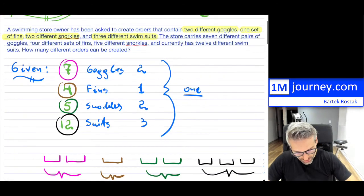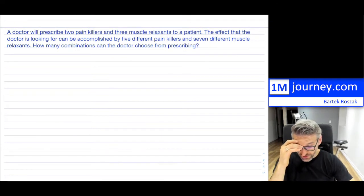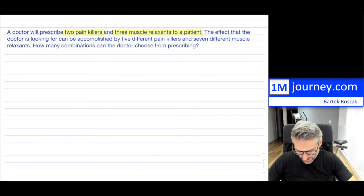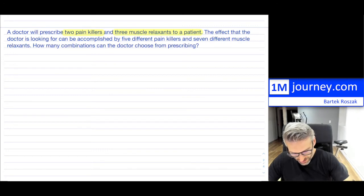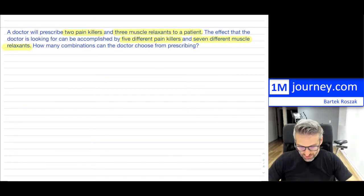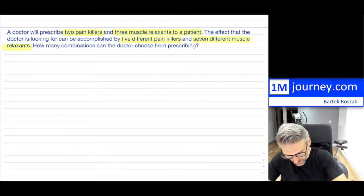That's example number one. Example number two: a doctor will prescribe two painkillers and three muscle relaxants to a patient. The effect the doctor is looking for can be accomplished by five different painkillers and seven different muscle relaxants. How many combinations can the doctor choose from when prescribing?